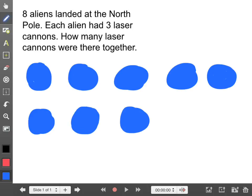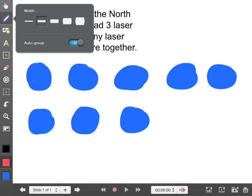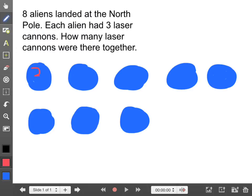Okay, so if I've got eight aliens, how many lasers did they each have? Three. Three, so if I put a three inside that alien and a three in that and three in that, three in that, three in that.